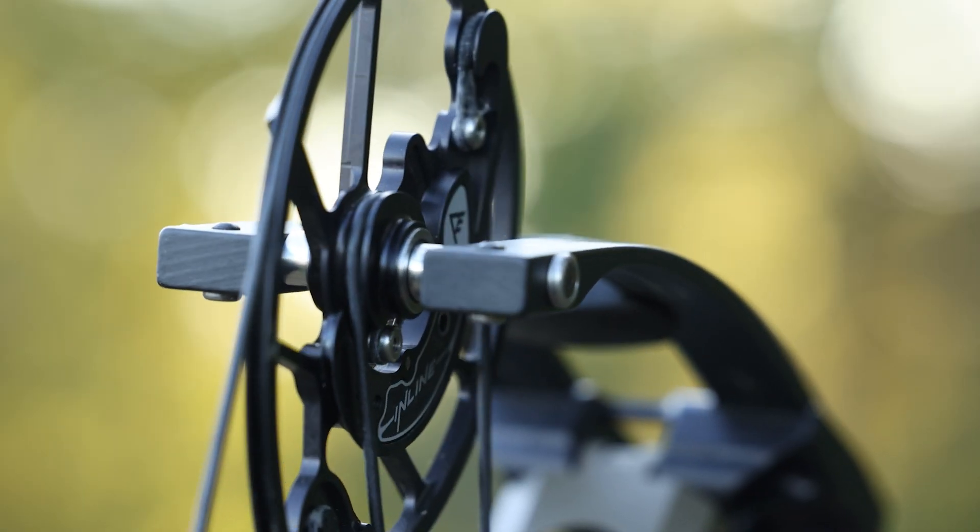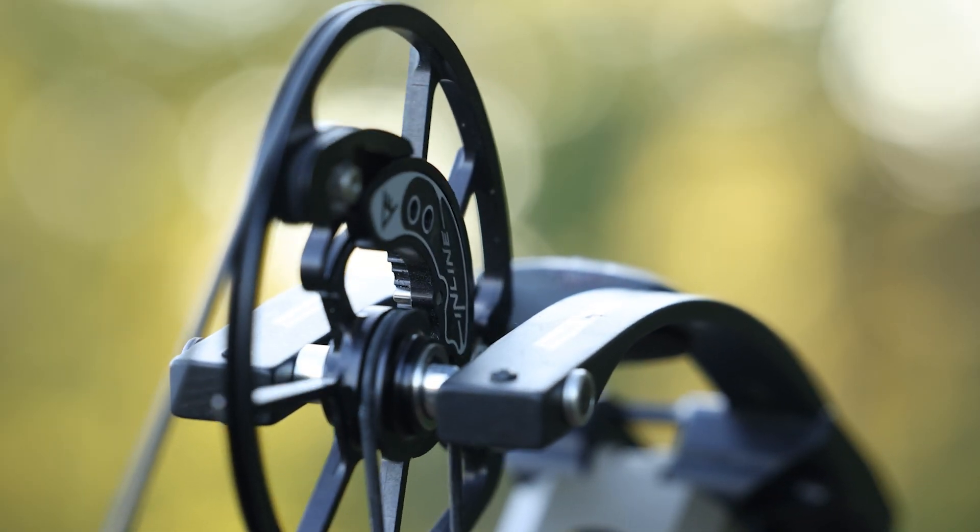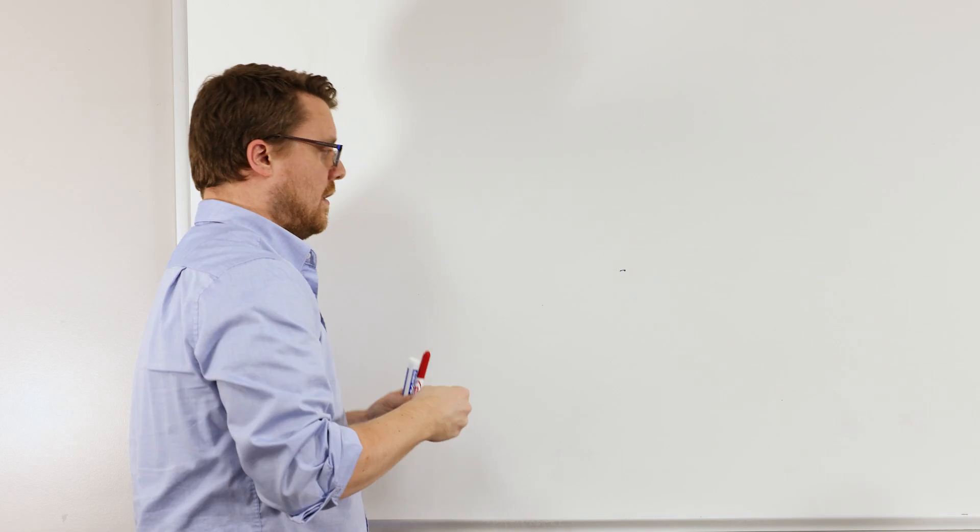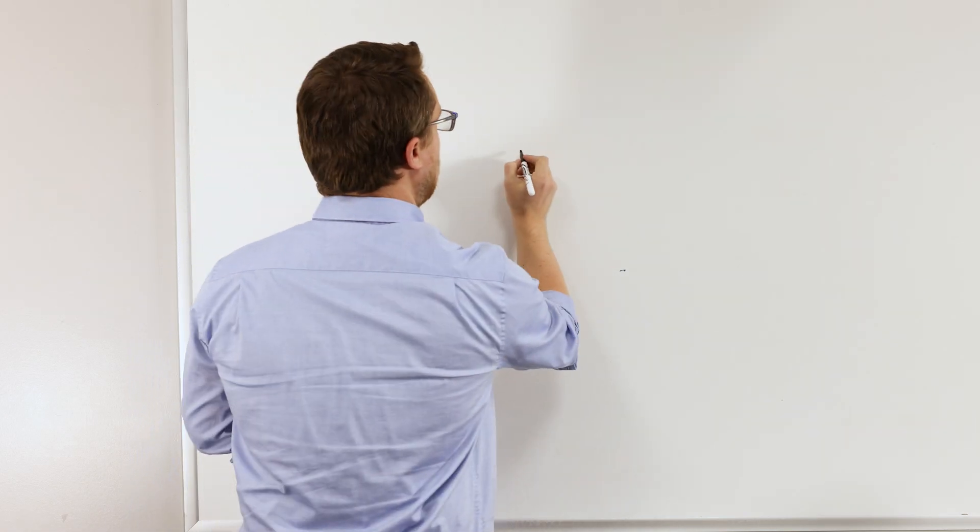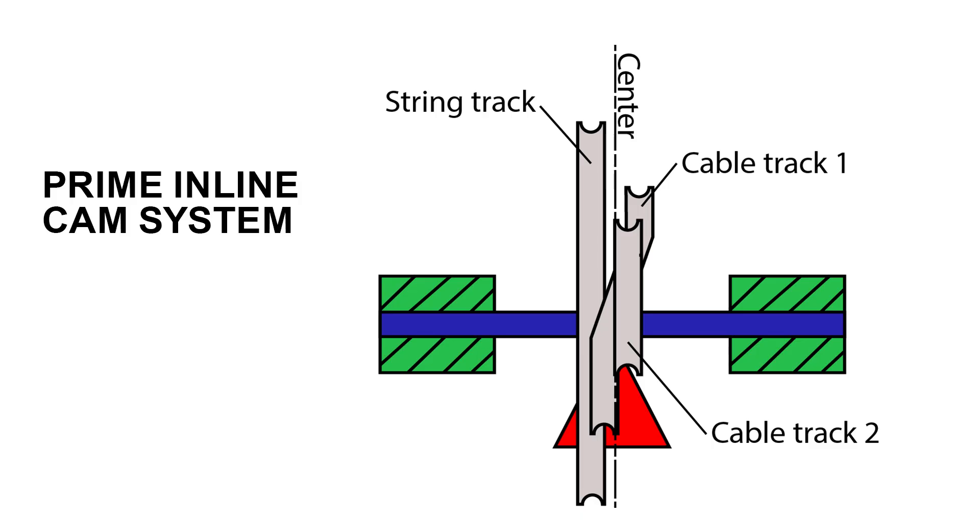Now to talk about the inline cam system. So the inline cam system is very similar to a three track binary cam system, in that we have a string force, and then we also have a power cable and a take up cable.